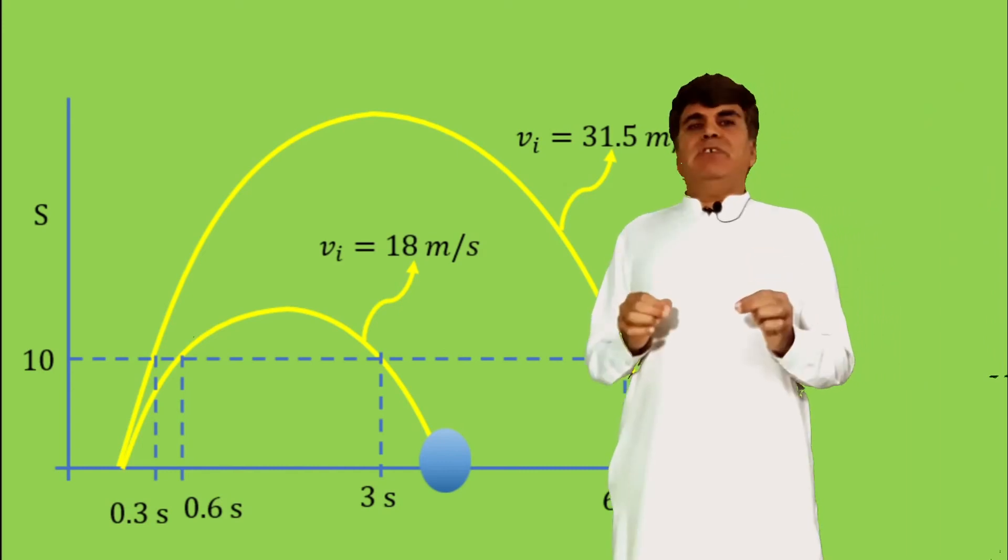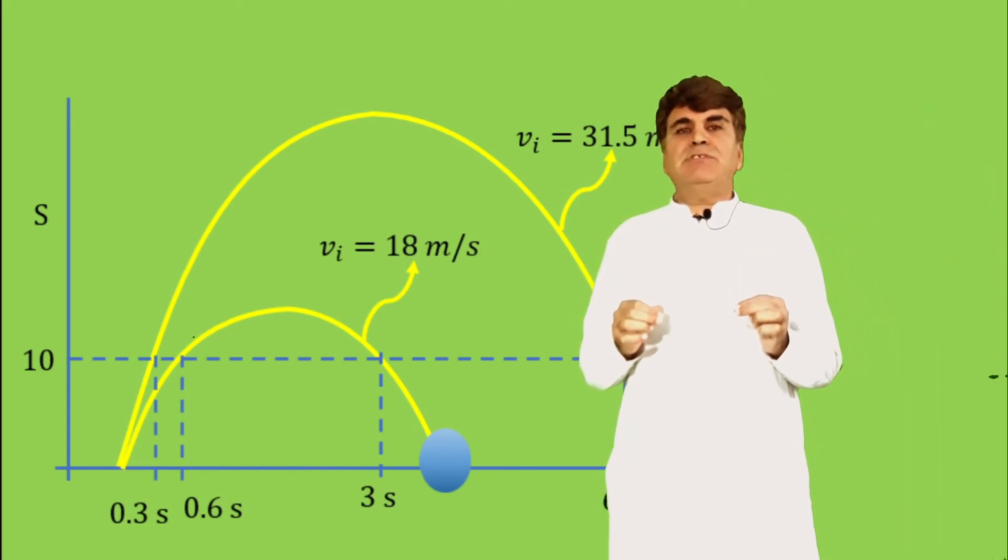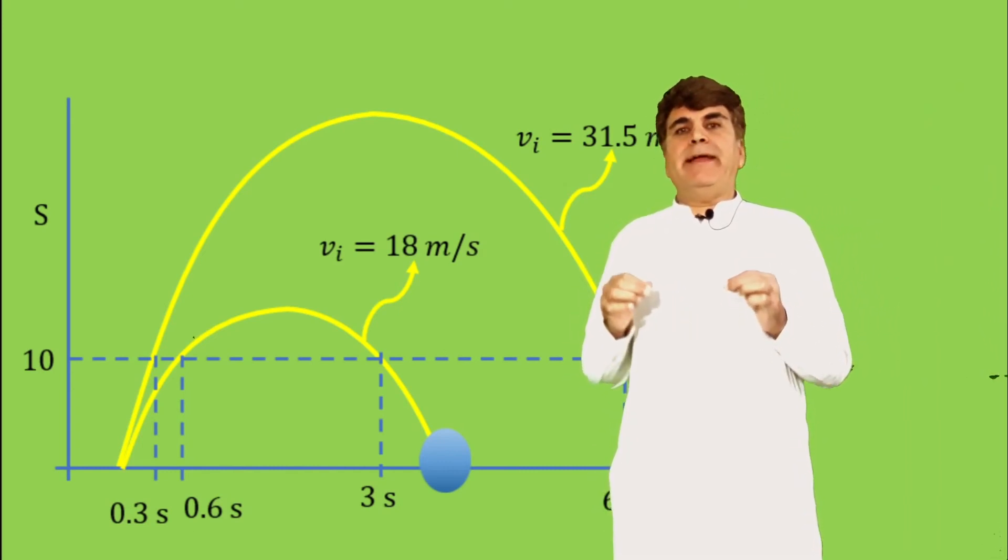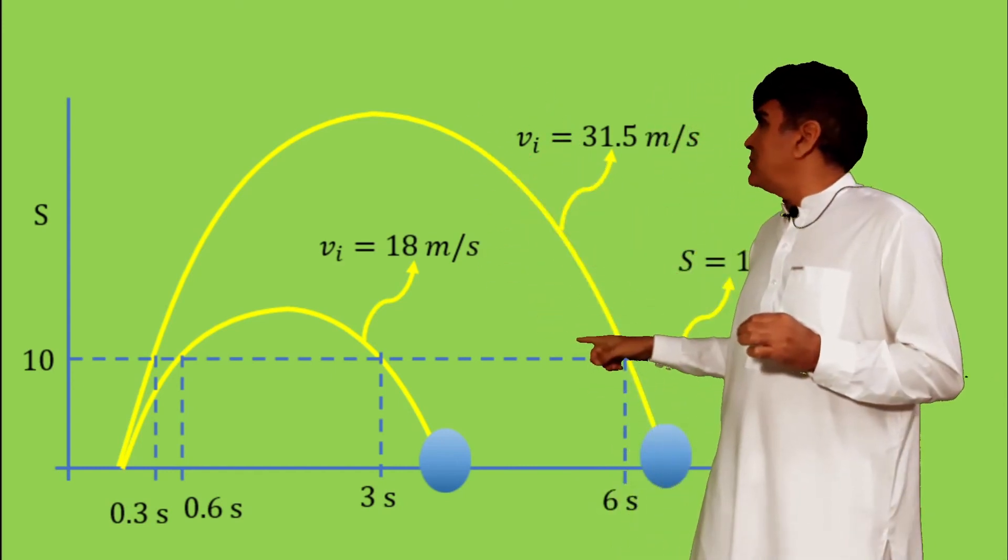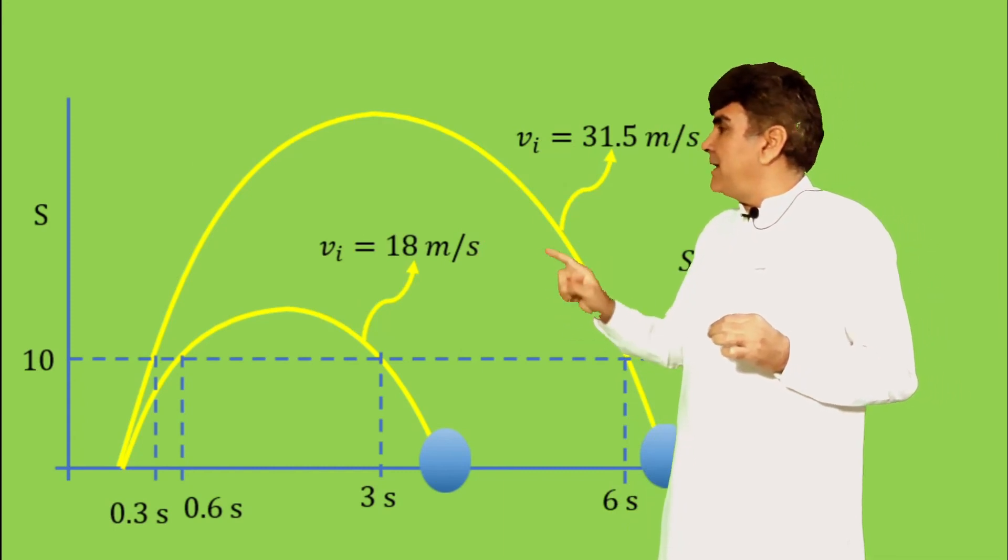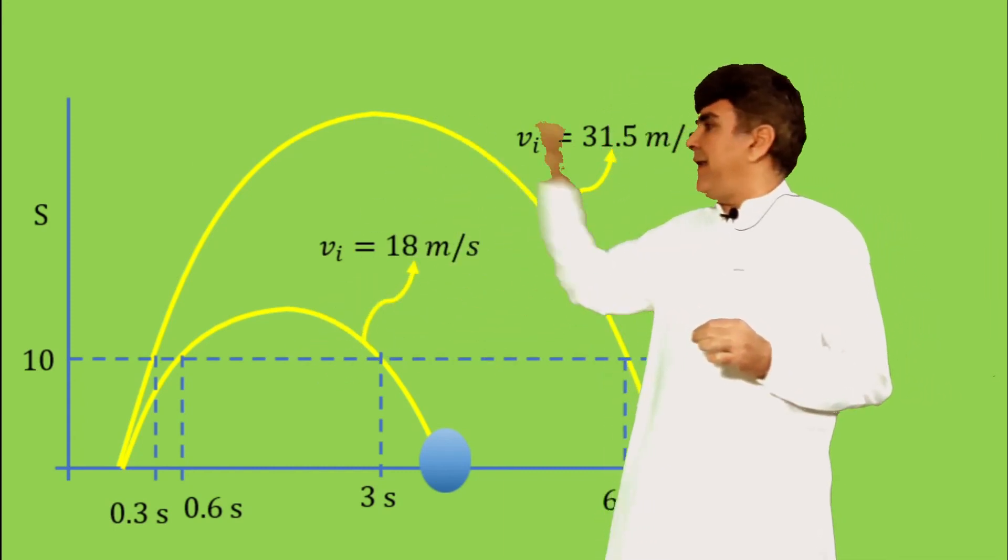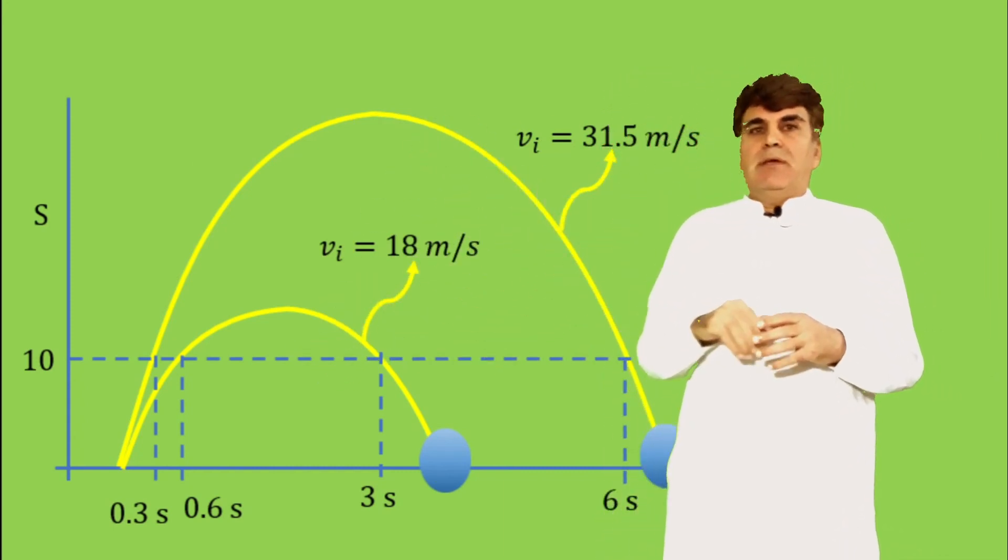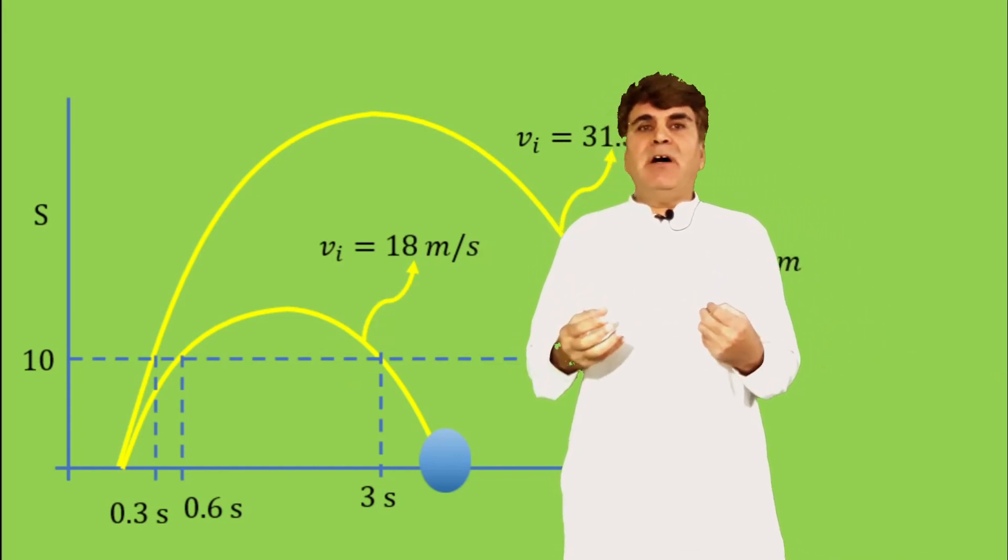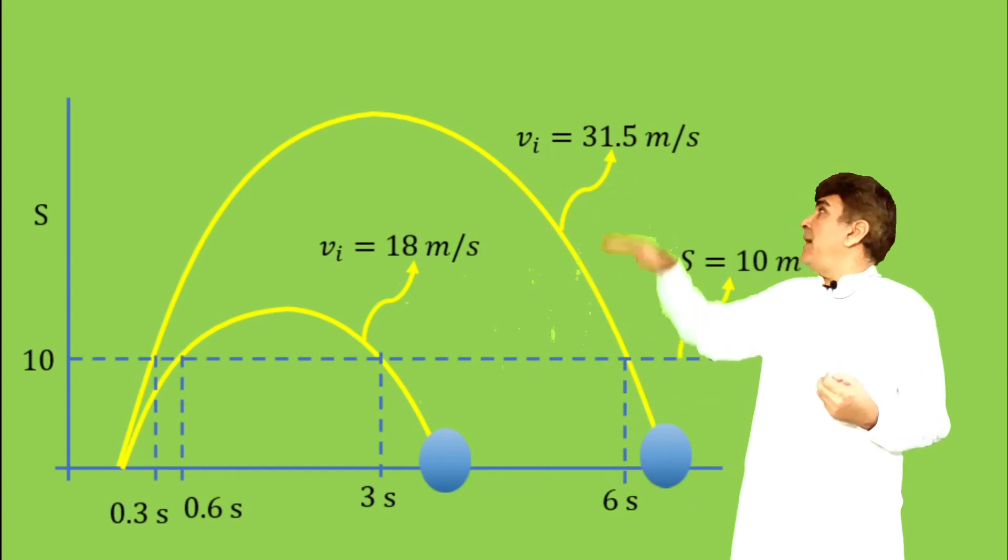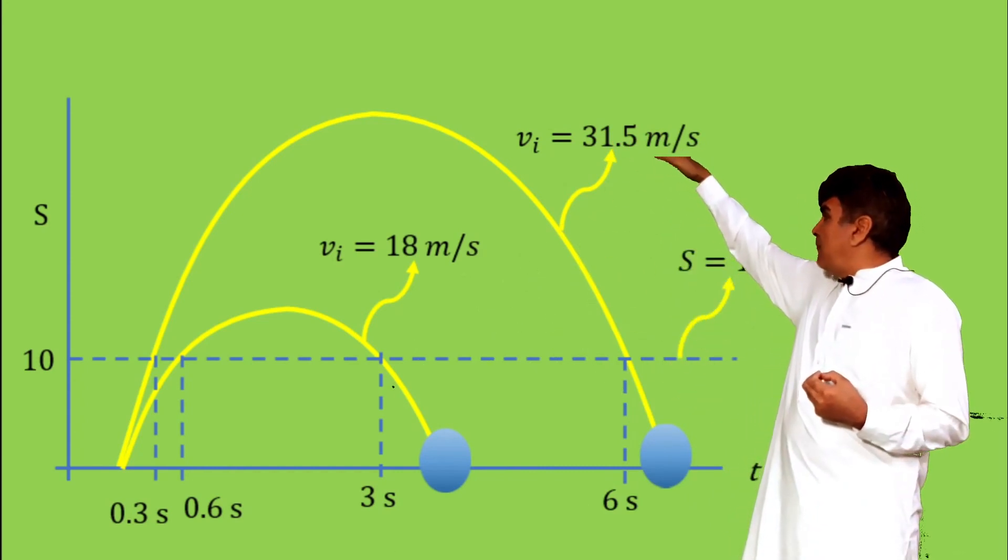So the first equation of motion measures the time for the point at 10 meters in the upward direction and the point at 10 meters in the downward direction.